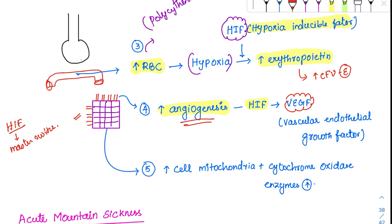Finally, cellular modification occurs intracellularly. There's an increase in cell mitochondria and cytochrome oxidase. So from the periphery to the last level, everything can get acclimatized to high altitude.